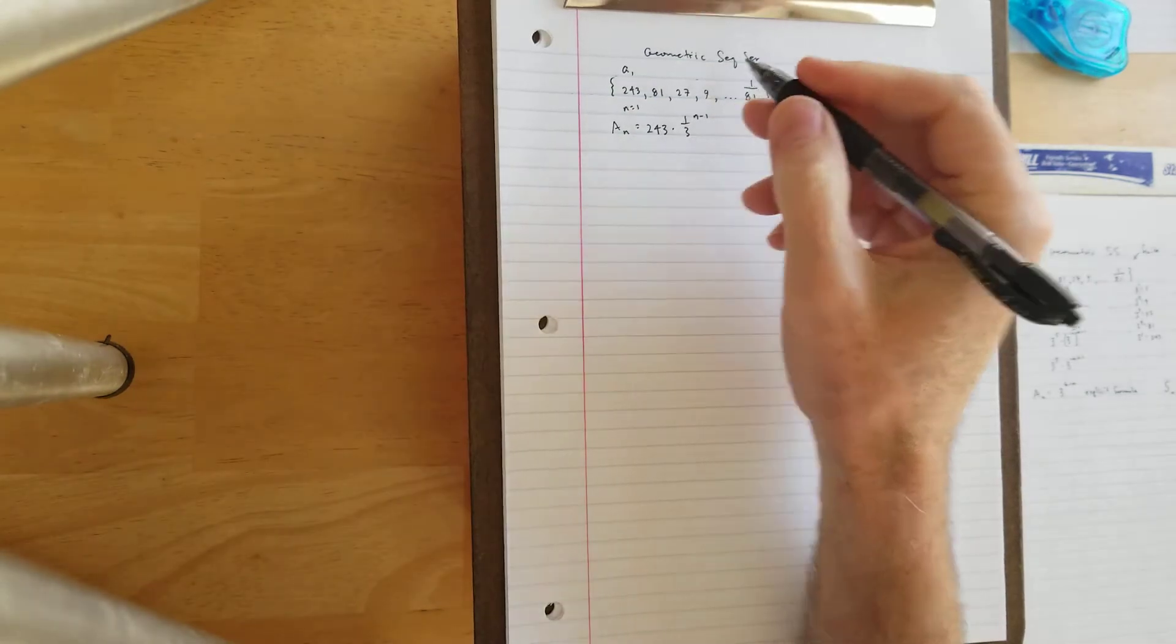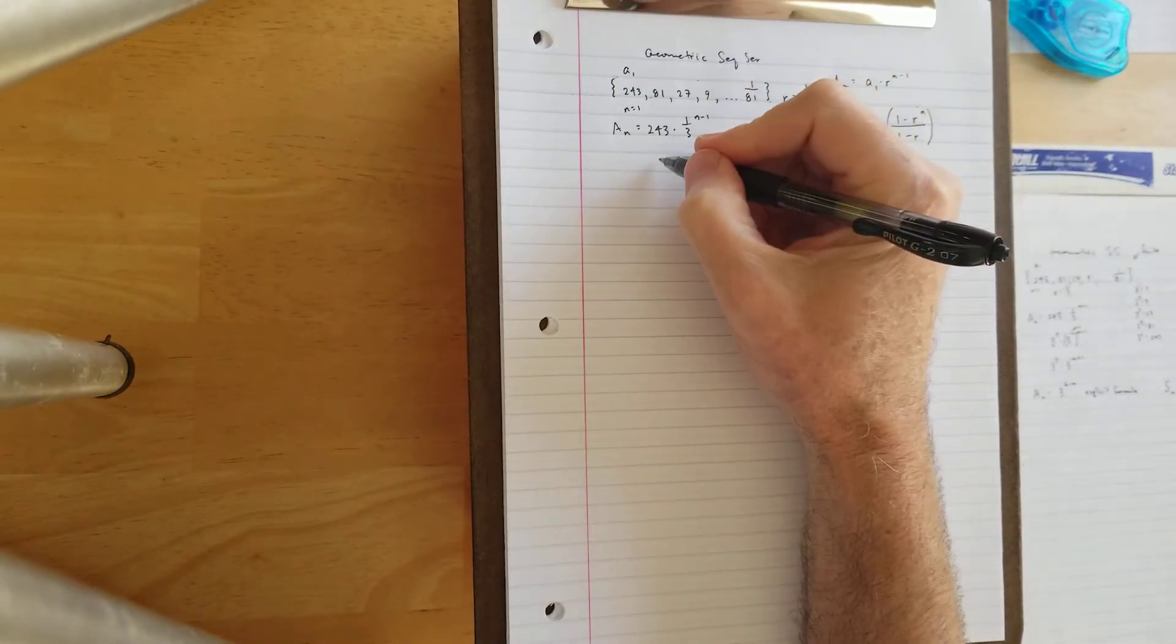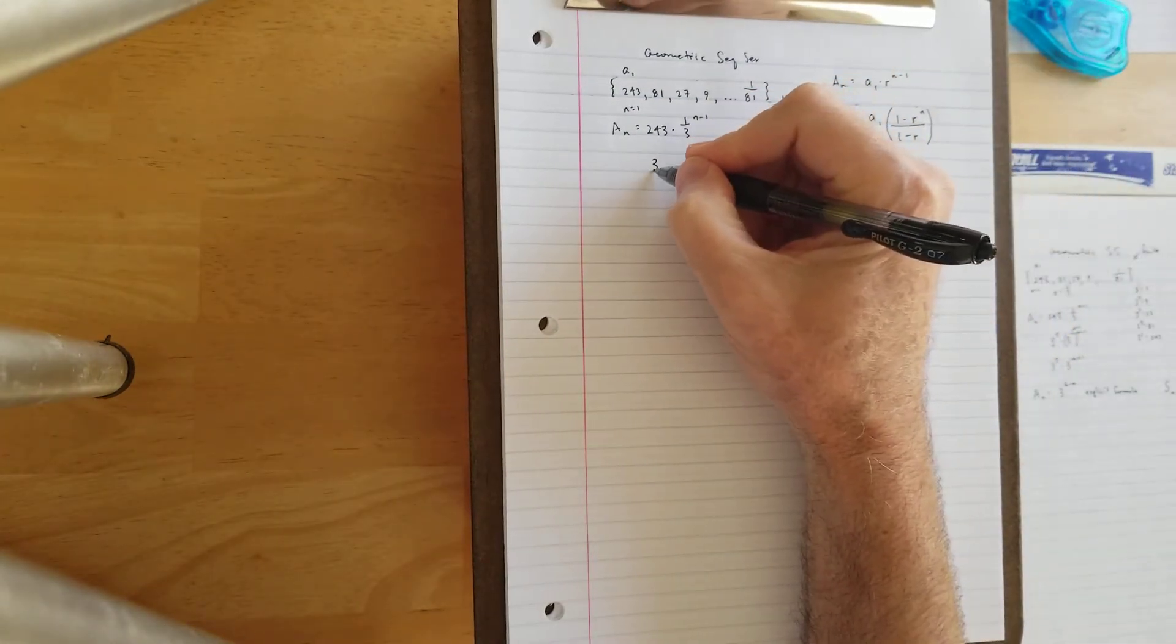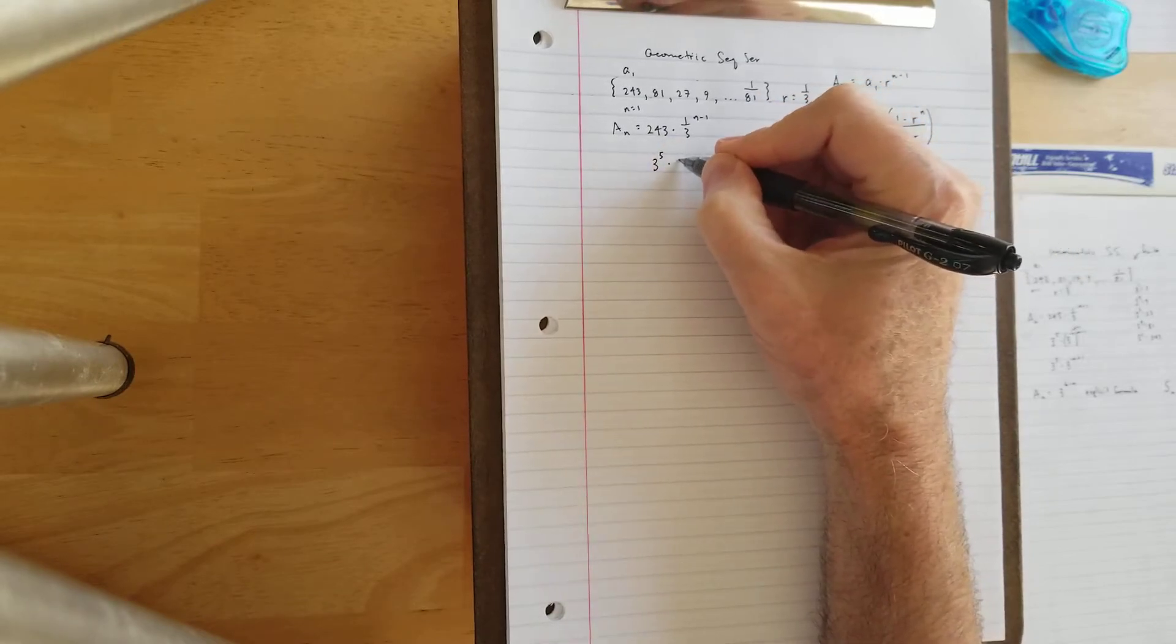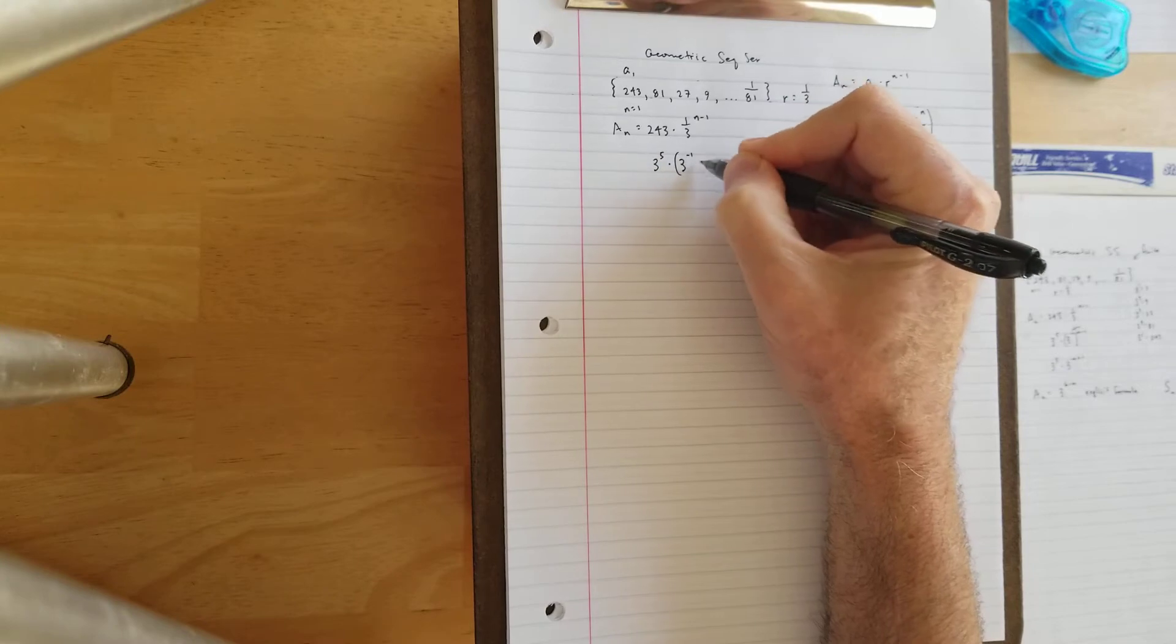Let's change 243 to 3 to the 5th power. So 3 to the 5th times, and 1 third is 3 to the negative 1. We'll attach the n minus 1 to that.